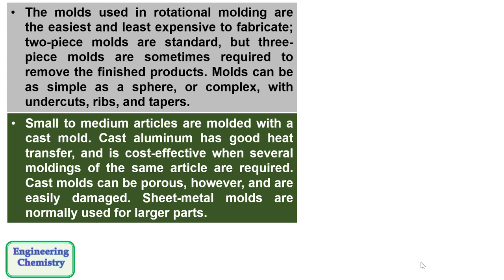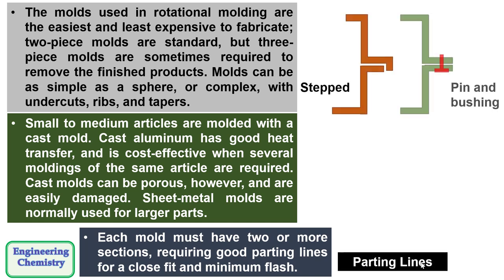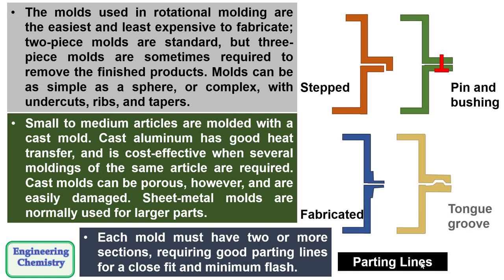Sheet metal molds are normally used for larger parts. Each mold must have two or more sections requiring good parting lines for a close fit and minimum flash. These parting lines can be stepped, pin and bushing type, fabricated or tongue groove.